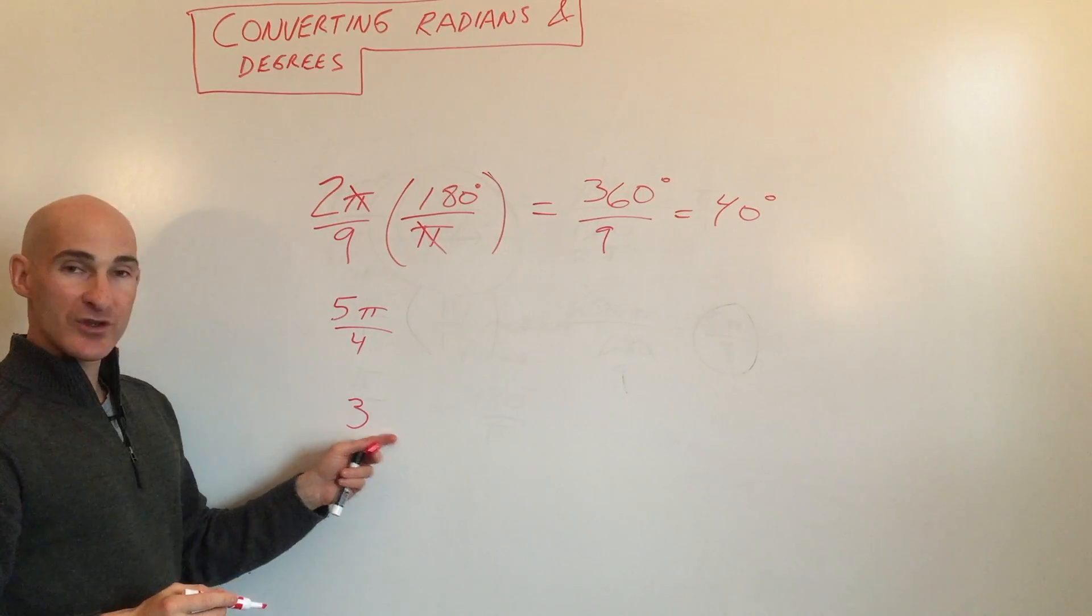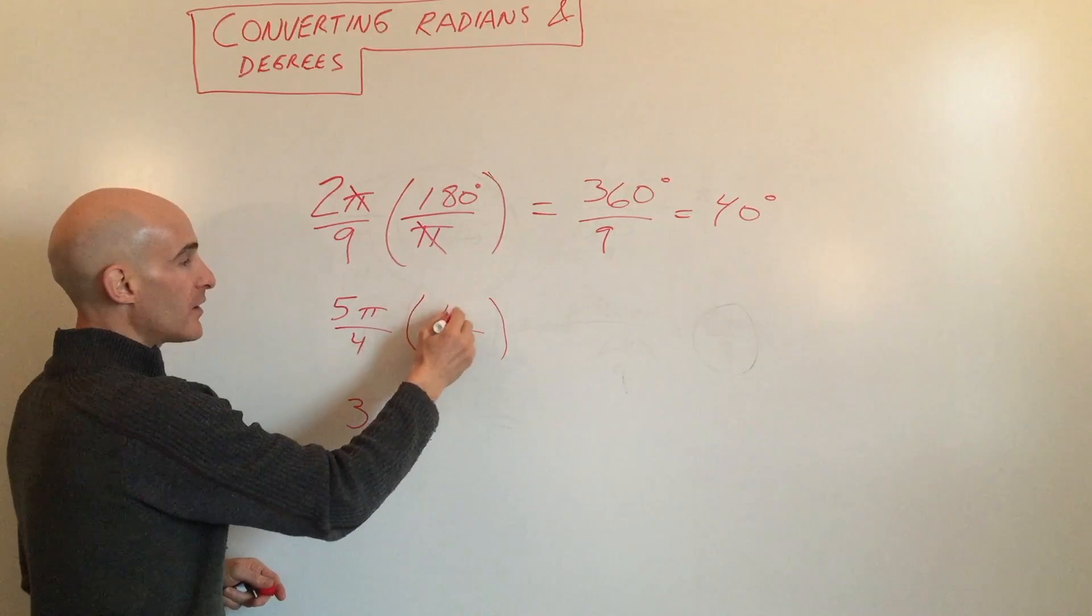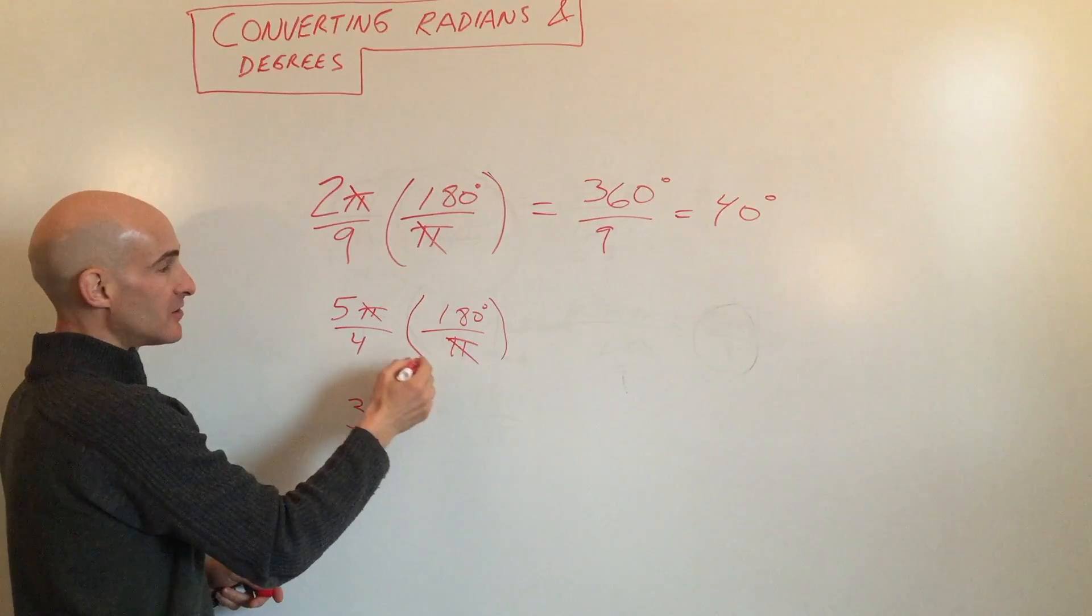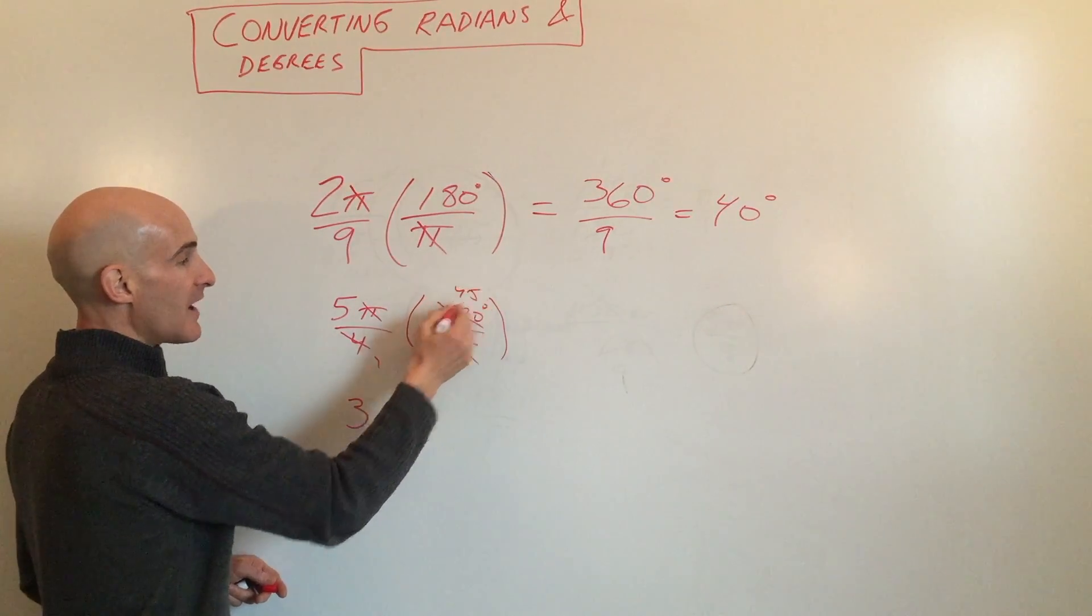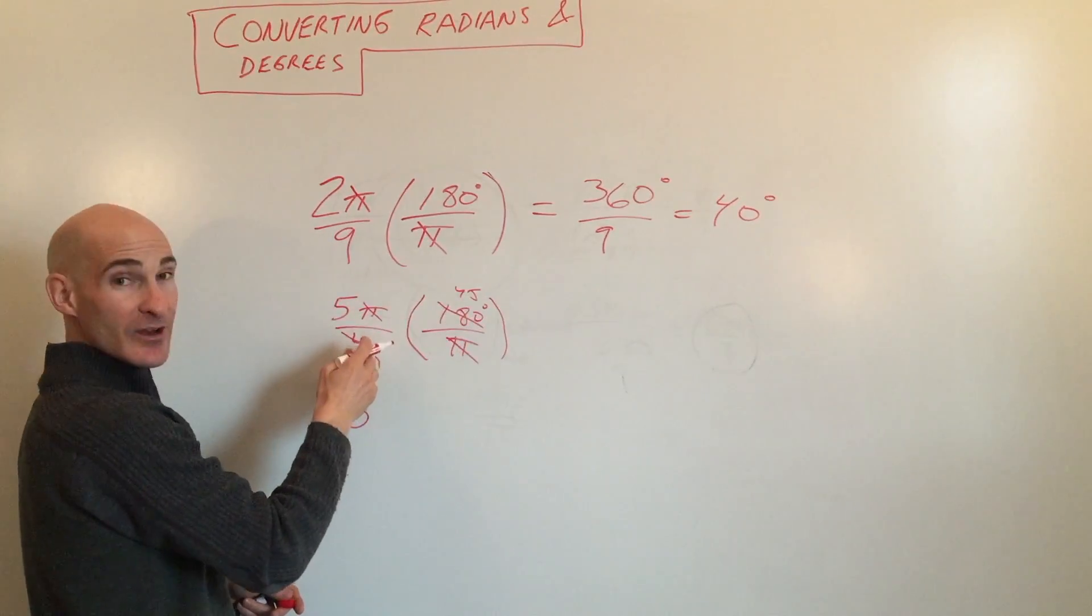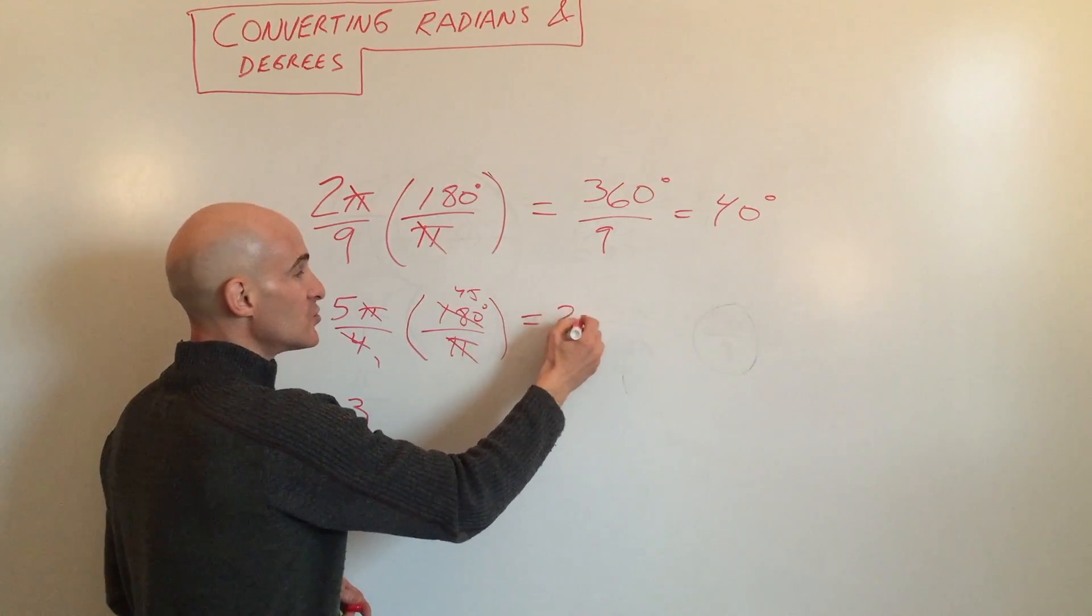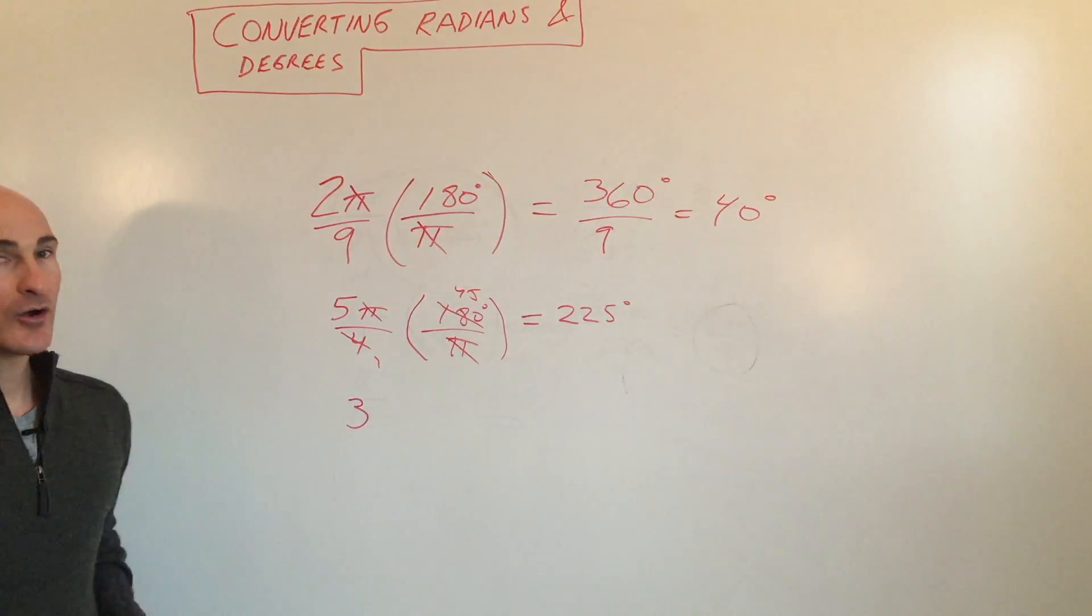Let's multiply this one by 180 degrees for every π radians. The pies cancel. Four goes in here once, four goes in here 45 times. I'm just pre-reducing numerator and denominator, top and bottom. When you multiply across, you get 225 degrees.